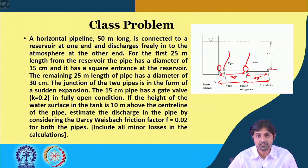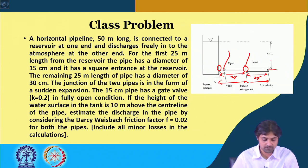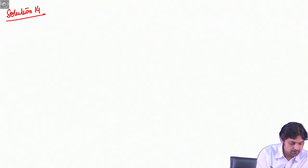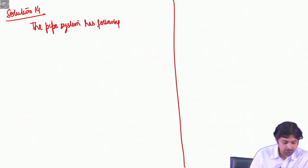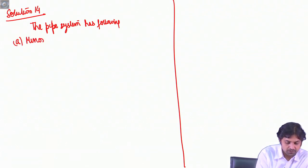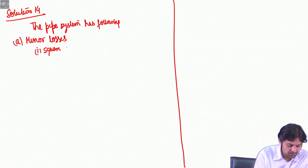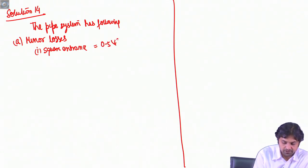There is also going to be an exit loss, and the total water height is 10 meters. So, starting solution 14. The pipe system has minor losses. The first one is the square entrance, and the head loss here will be equal to 0.5 V1² / 2g. We have learned this formula.